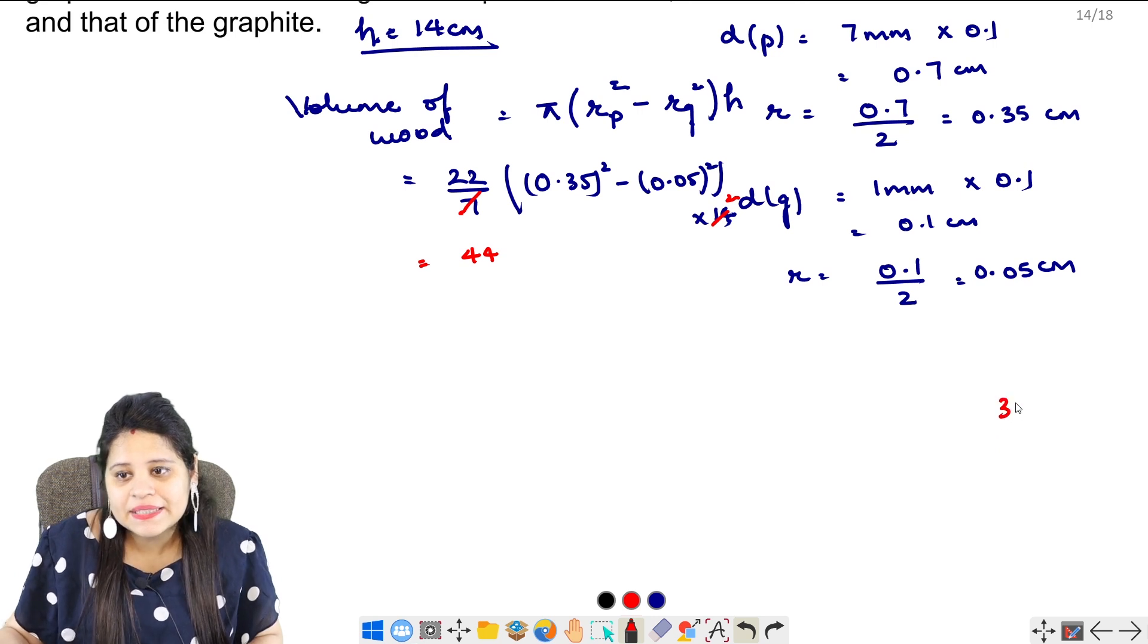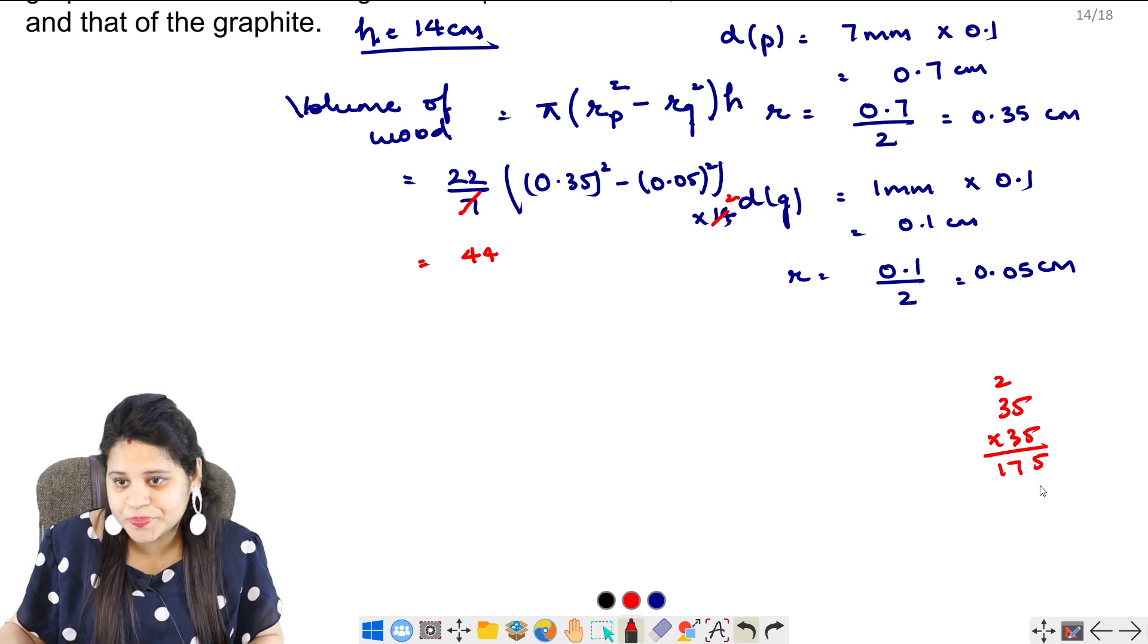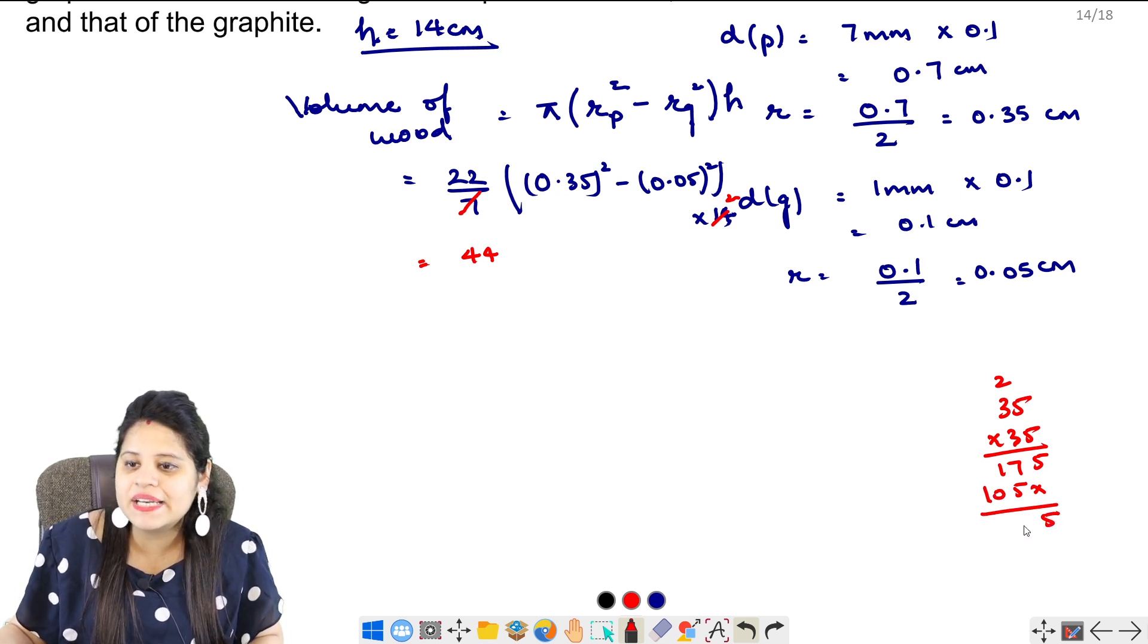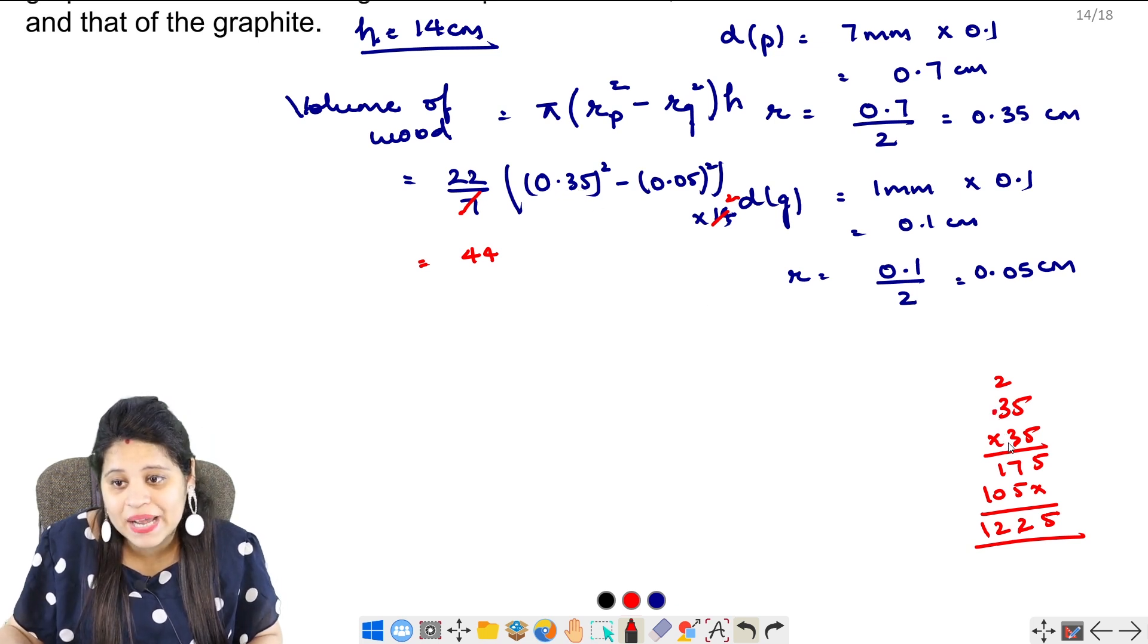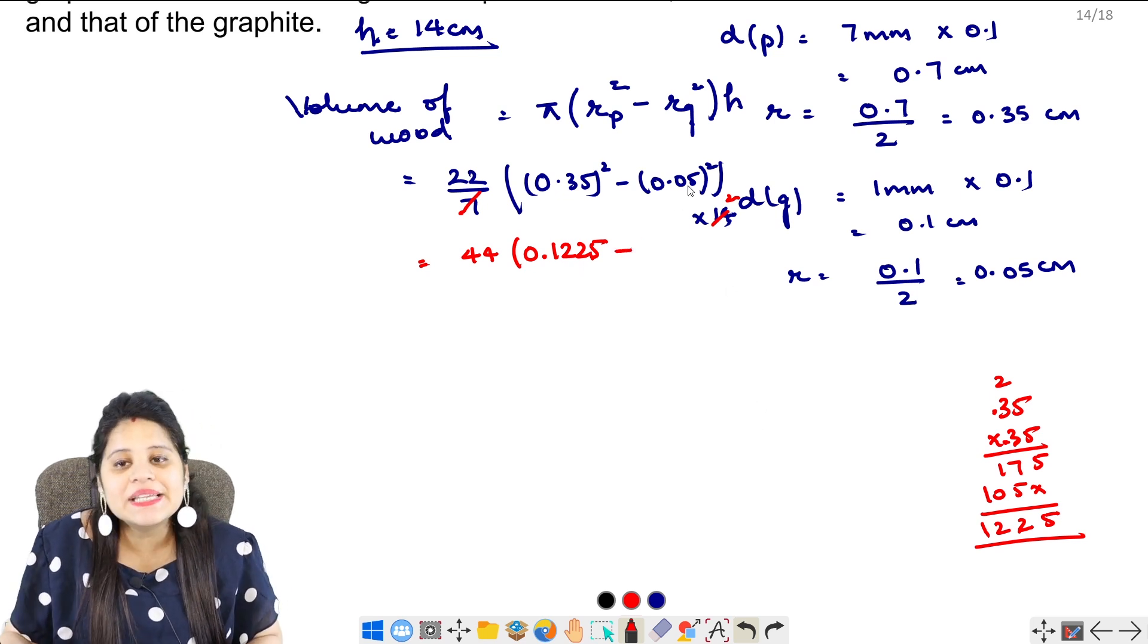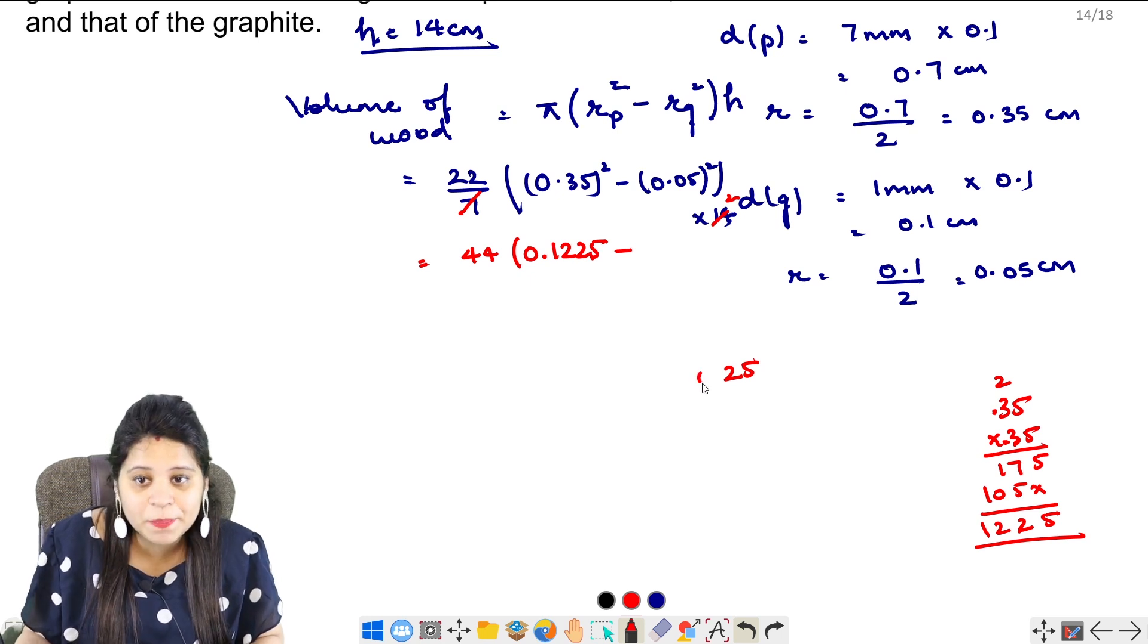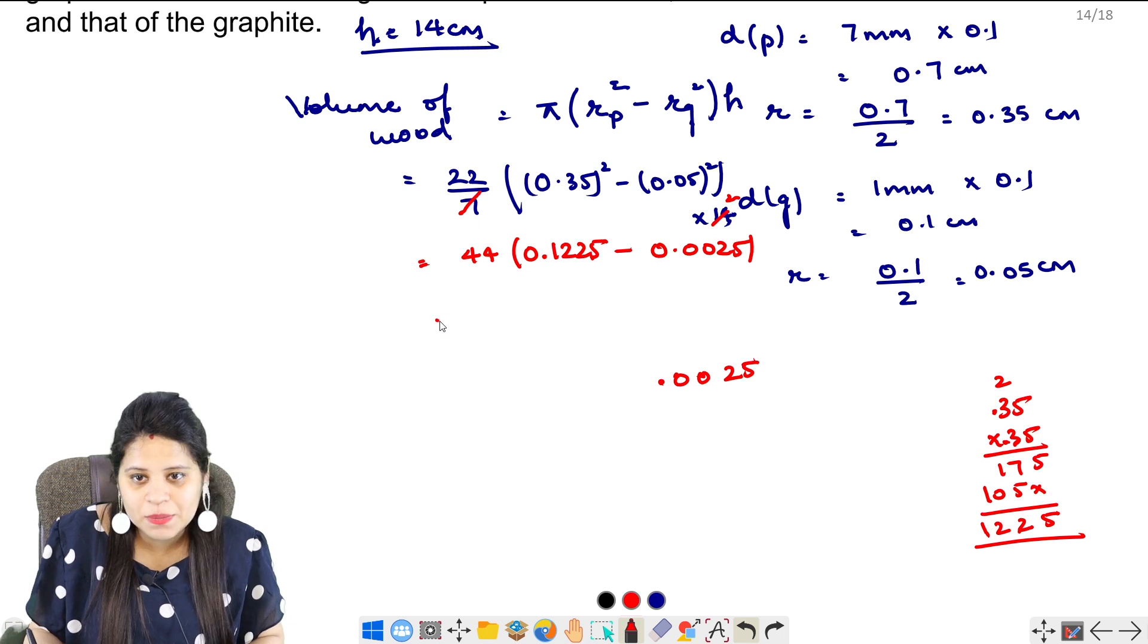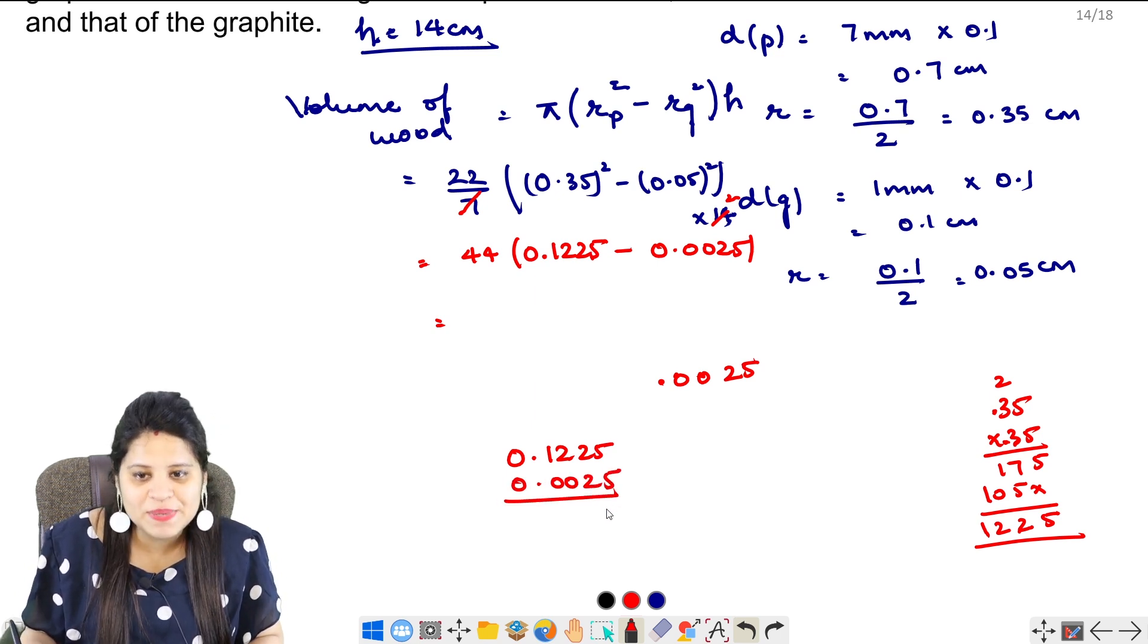Now I will take it down a little bit. So we will do 0.35 square and 0.05 square. So this is going to be 0.0025. This is already cut, we have multiplied.